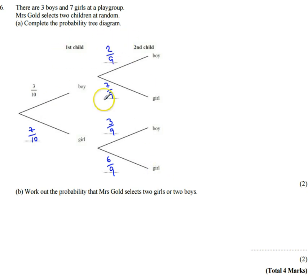The second branches are going to change here because they're dependent on the first. What happens in the first event is going to affect what happens in the second event. So that's why these probabilities here are different to each other.